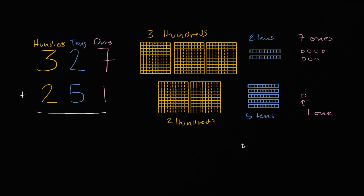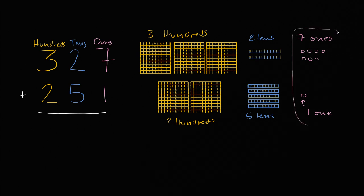Pause the video and see if you can add these two numbers together. All right, now let's do it together. We have seven ones, and to that we're going to add one one. Seven ones plus one one is going to be eight ones. You see it here — seven, and then you have an eighth one. So eight ones. Seven plus one is eight.